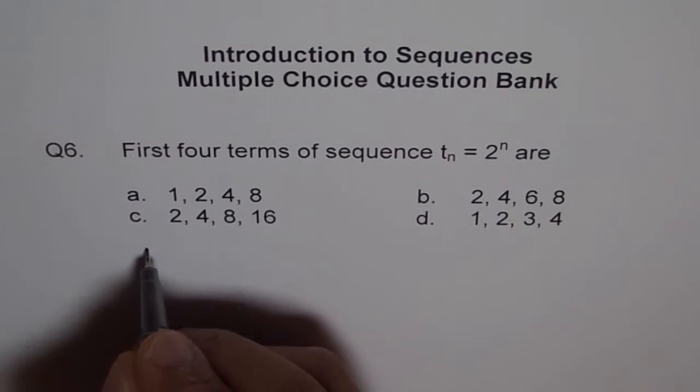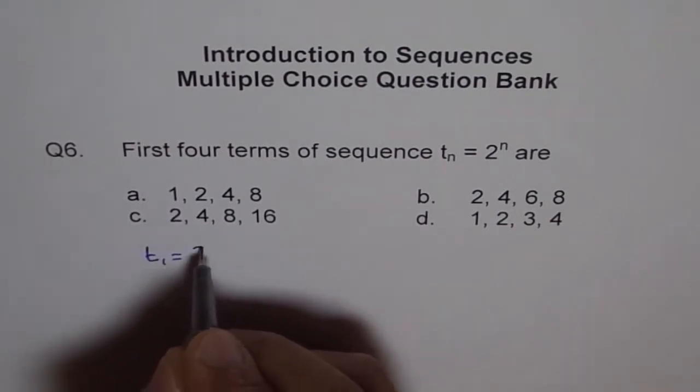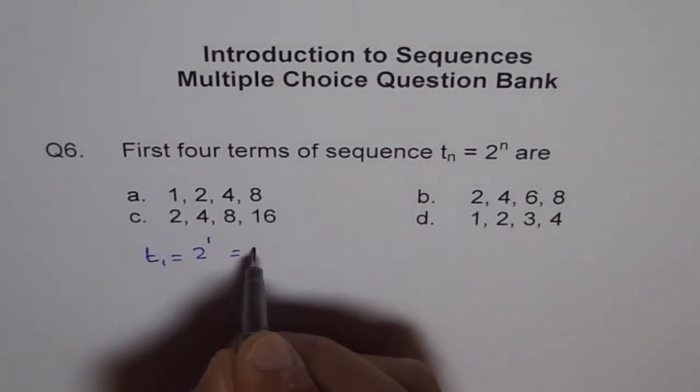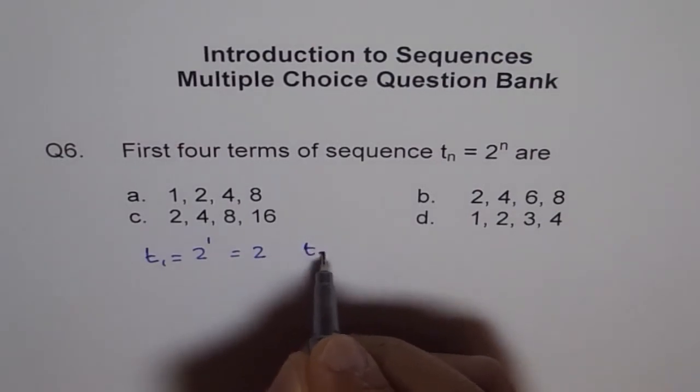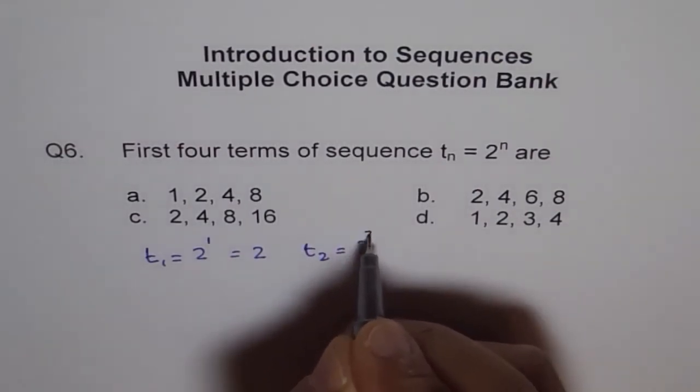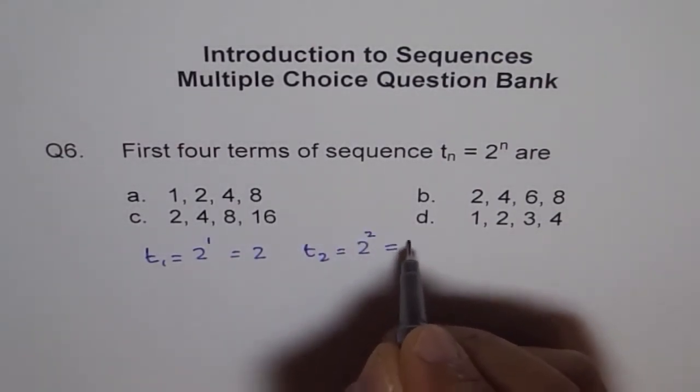So what you need to do is find T1 equals 2 to the power of 1 which is 2, and then T2 equals 2 to the power of 2 which is 2 times 2, 4.